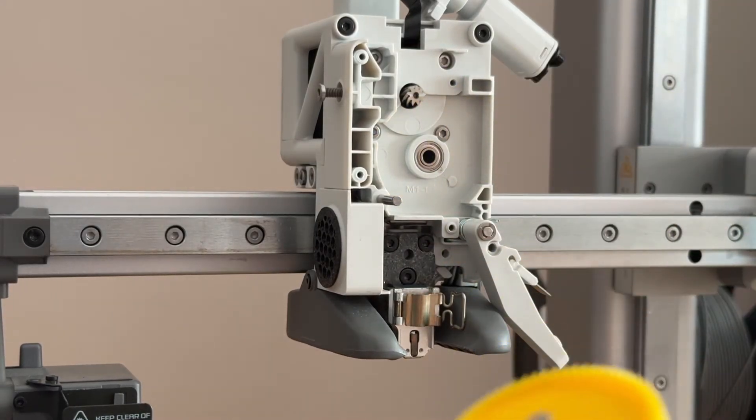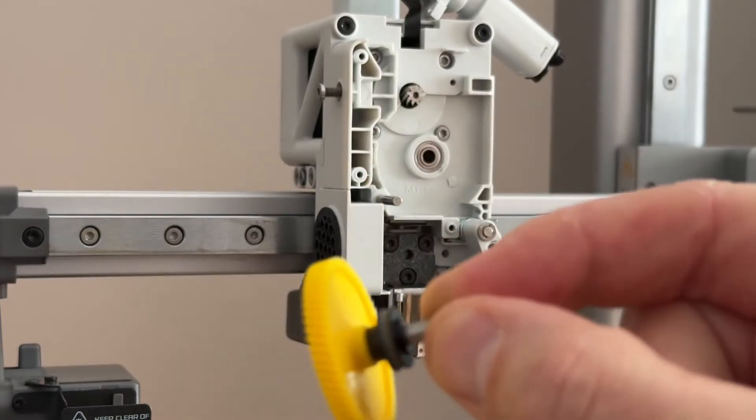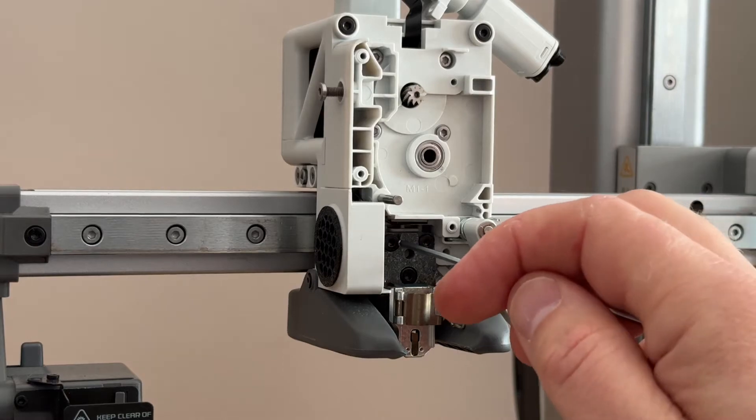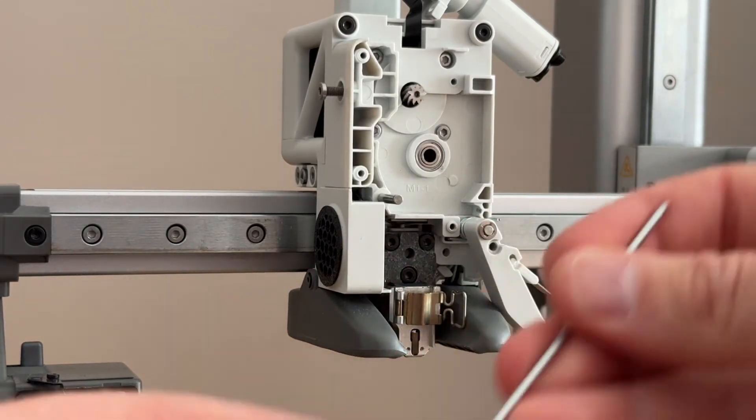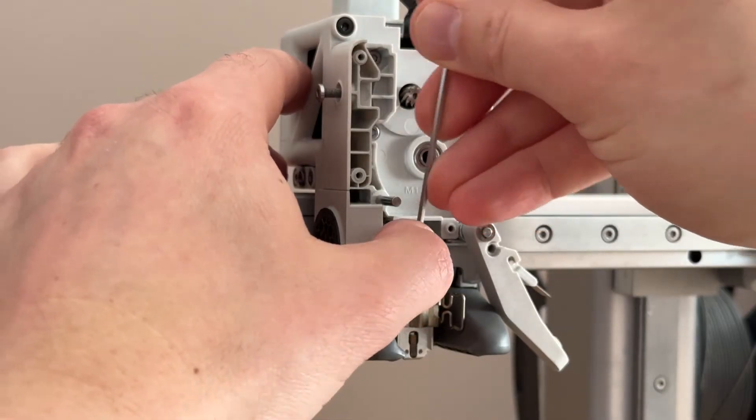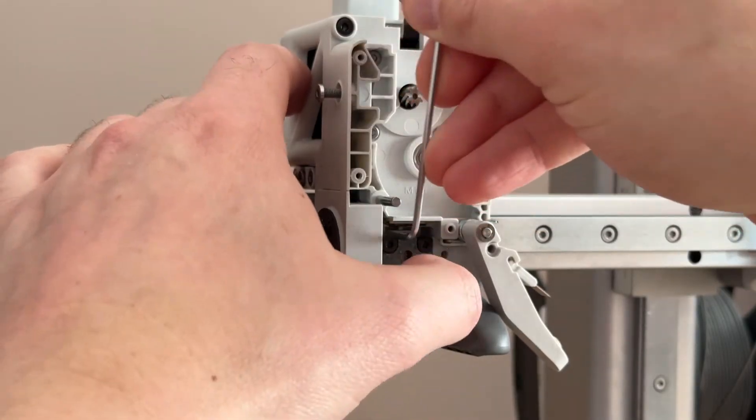There's your extruder here, all nice and clean. So as I showed earlier, those are the three screws to make sure that that's tight. If you're having issues with your nozzle being loose after it's fitted, just tighten those down.